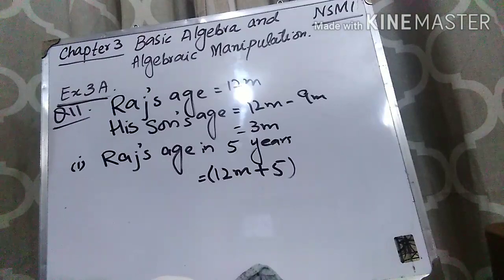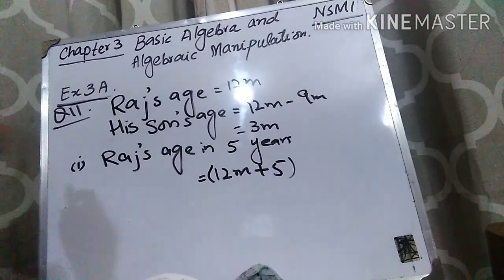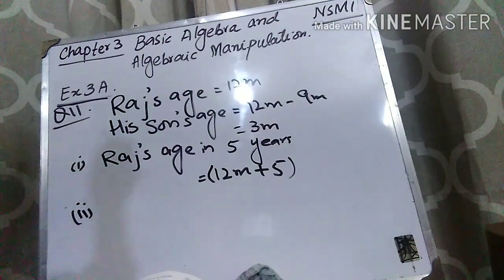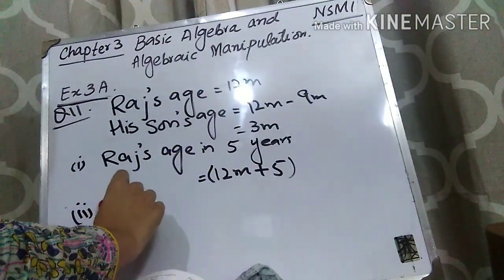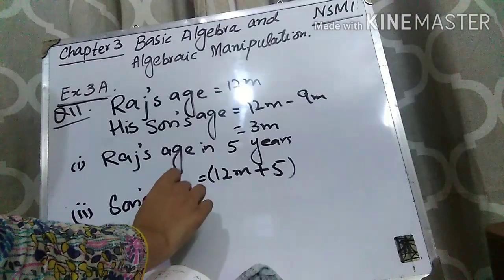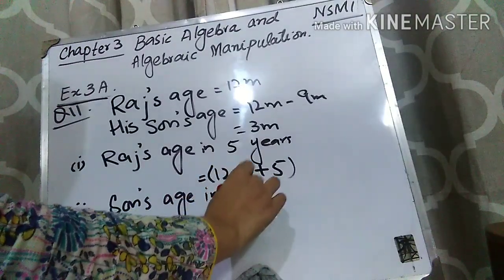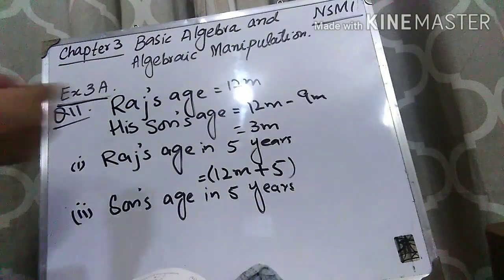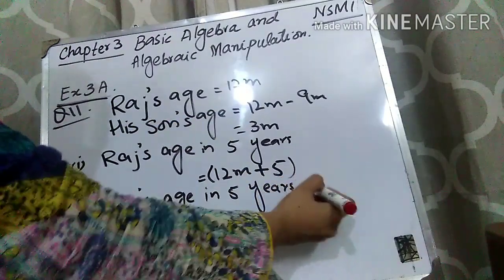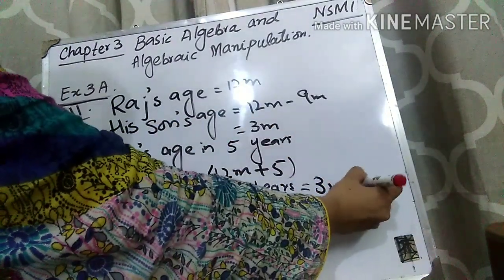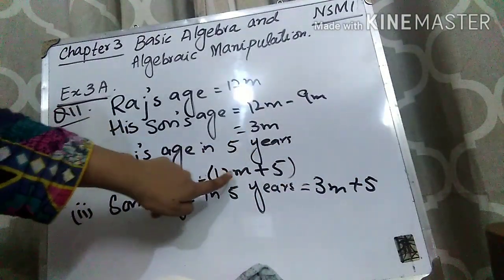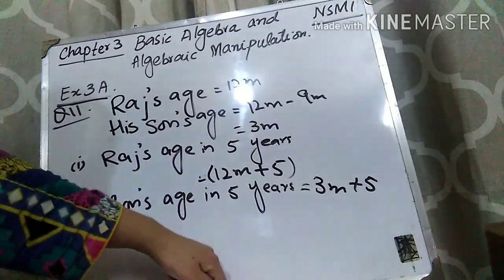Now in part 2, they are saying find the sum of their ages in 5 years' time. We have found Raj's age in 5 years. We will also find the son's age in 5 years. You add 5 years to the son's present age of 3m. So Raj's age in 5 years is 12m plus 5, and the son's age in 5 years is 3m plus 5.